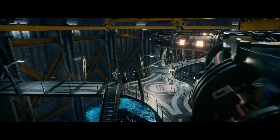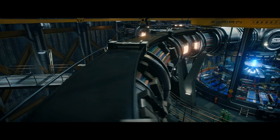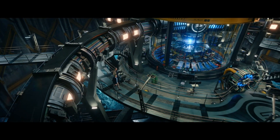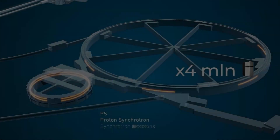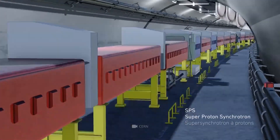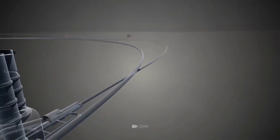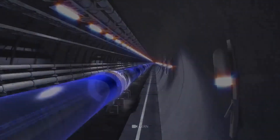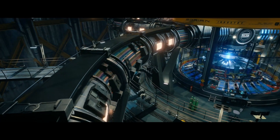First off, the particle accelerator at the Saurian building was small by today's standards. You need a very large ring in a particle accelerator in order to get the charged particles up to the necessary speeds. For example, the largest and most powerful particle accelerator in the world is the Large Hadron Collider at CERN. The ring there is 27 kilometers, or just shy of 17 miles, in length. It's clear to see that the particle accelerator in the movie is nowhere near that long.